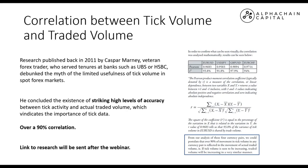A 90% correlation between tick volume and actual traded volume is great, so it's crazy that so many people don't actually look at volume and tick data in their trading. From the analysis of these four currency pairs, over 90% of movement in tick volume in any currency pair is reflected in a movement of actual traded volume — i.e., if tick volume is seen to be increasing, traded volume will be increasing in a very similar manner. There's lots of other research online supporting this study, and lots of independent studies showing an extremely high correlation. From this and other research, we can safely assume that tick volume is a good representation of actual traded volume.